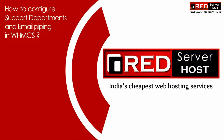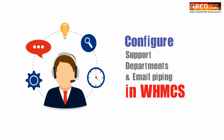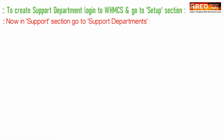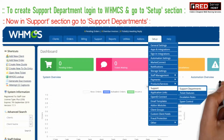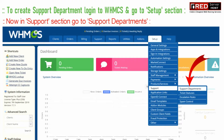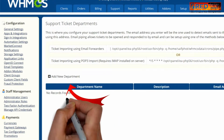Today in this video we will learn about how to configure support departments and email piping in WHMCS. To create a support department, login to WHMCS and then go to the setup section. Further, click on support departments inside the support section. Now click on add new department.